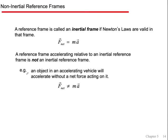A reference frame is called an inertial frame if Newton's laws are valid — in other words, there's no acceleration going on in it. An object in an accelerating vehicle will appear to accelerate without a net force acting on it from that reference frame. Let's say you're inside a semi-truck with an air hockey table, and a puck is sitting on it.